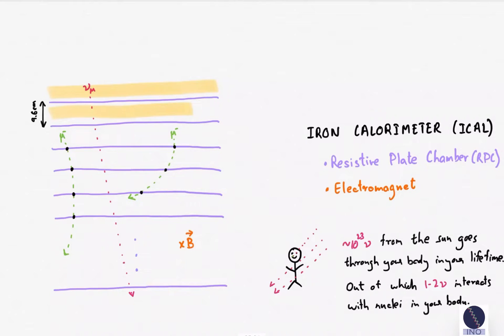The trick done in ICAL is to keep iron plates between the RPCs. We call the iron plates the passive detector. Most of the neutrinos will still pass through the detector, but rarely one of them will see the dense iron nucleus, interact with it and give off a muon.